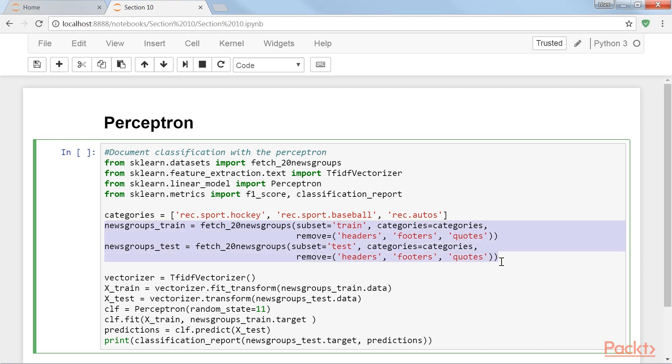First, we download and read the dataset using fetch underscore 20 newsgroups function. Consistent with other built-in datasets, the function returns an object with data, target and target names attributes. We also specify that the document's headers, footers and quotes should be removed. Each of the newsgroups uses different formatting conventions in the headers and footers. Retaining them makes classifying the documents artificially easy.